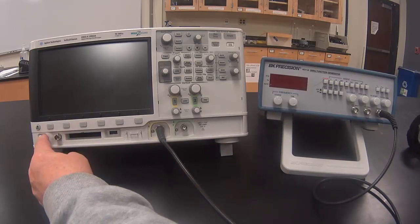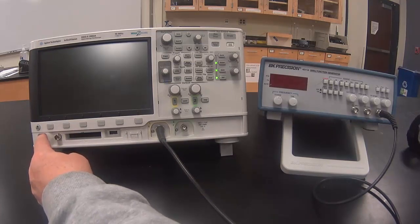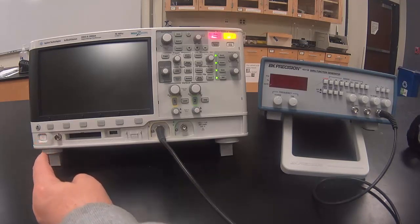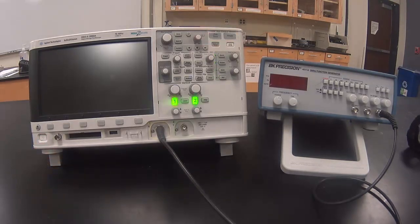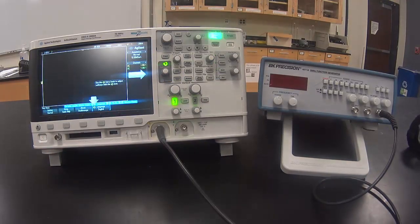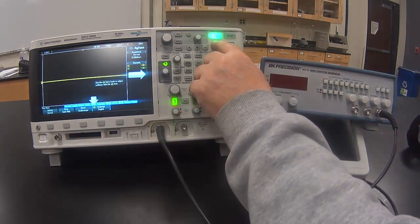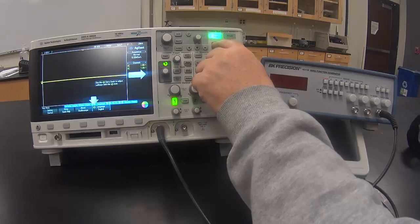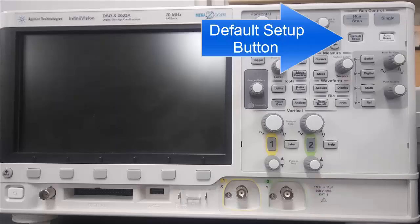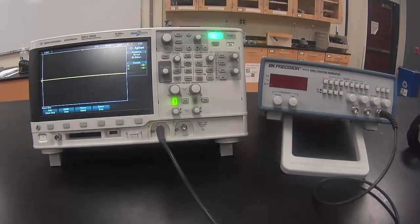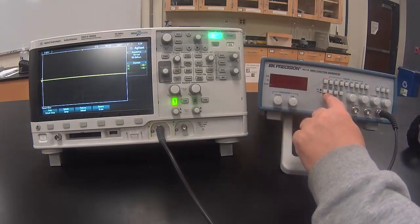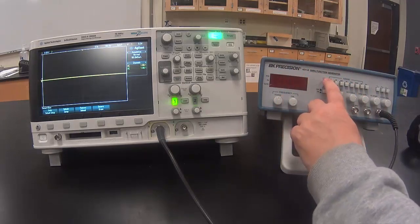Turn the oscilloscope on and then just wait for it to boot up. It is a good idea to press the default setup button. The oscilloscope boots up with the settings of the previous user. You don't know what those were. Now turn on the function generator using the power button.